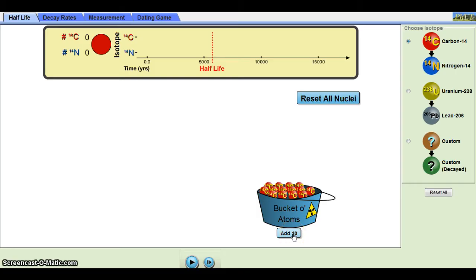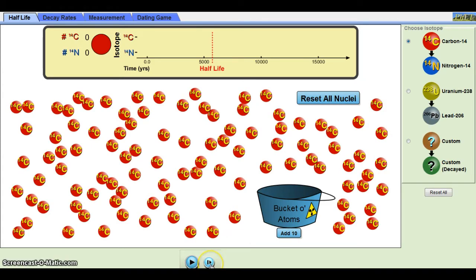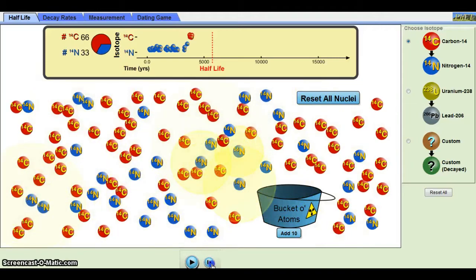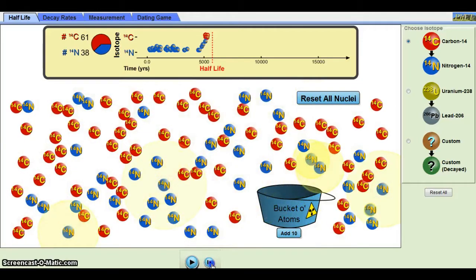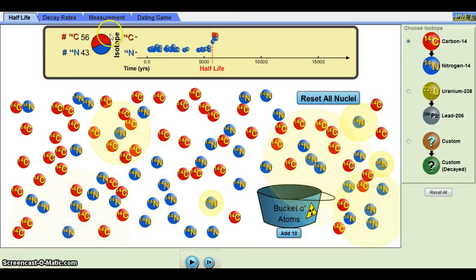Then, they add 100 atoms to the workspace and click on step until they reach the half-life mark. Once there, they should notice that about 50% of the carbon-14 atoms are now nitrogen-14.